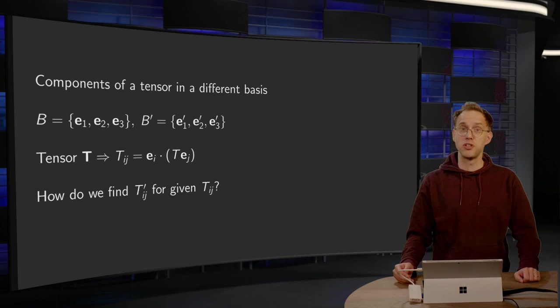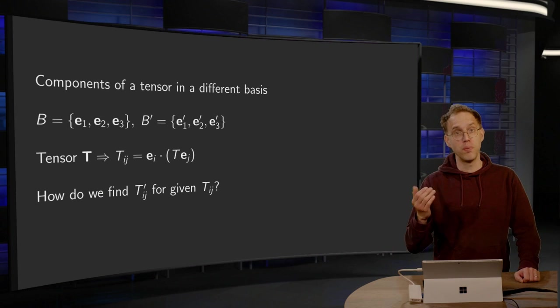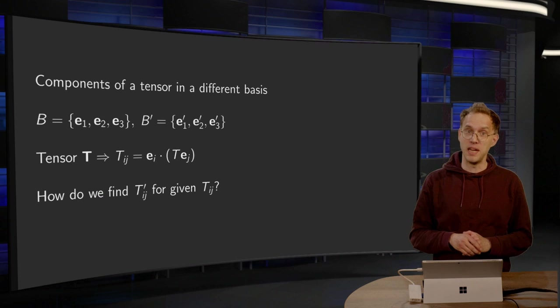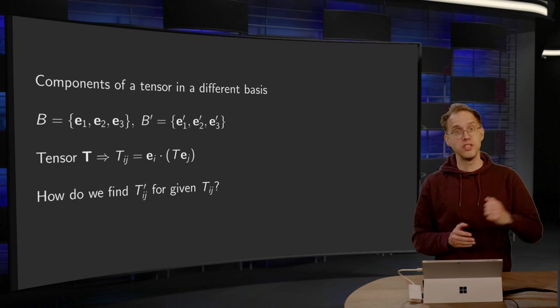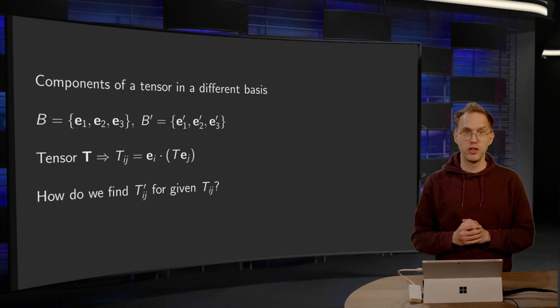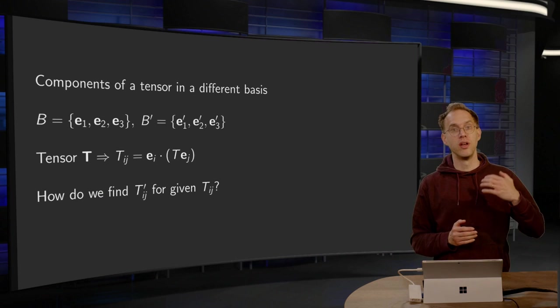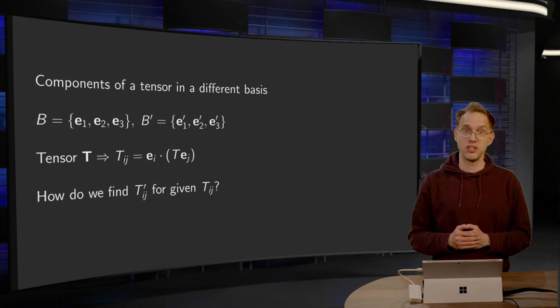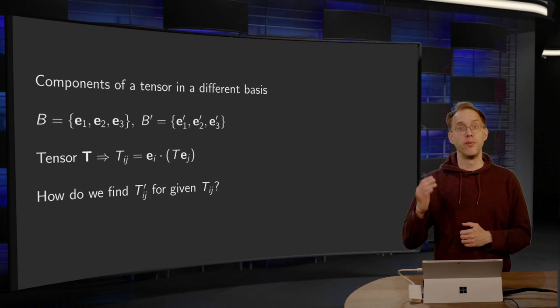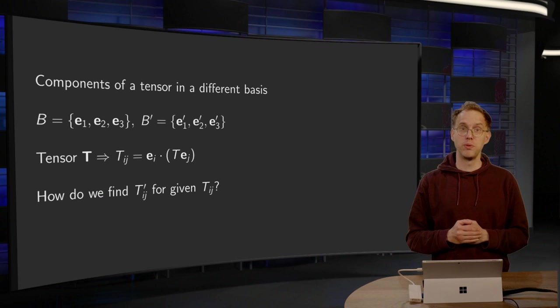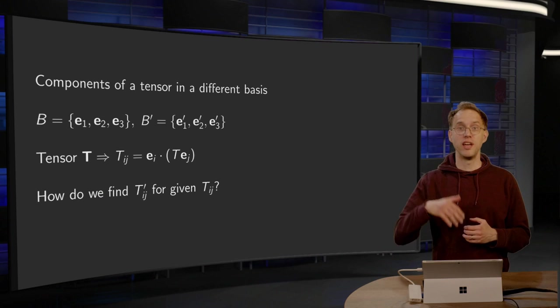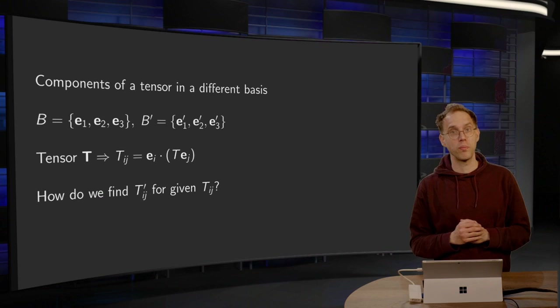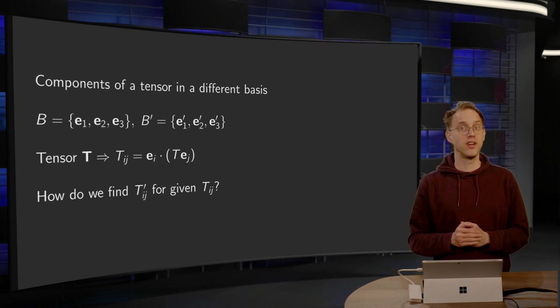We have seen that it is not so difficult to compute the components of a vector in a different basis. We just need to use our orthogonal tensor Q appropriately. For the conversion of tensors we can use the same idea. We can use our orthogonal Q to compute the components of a tensor in a new basis if we know the components in an old basis. In this video we'll see how this is done.